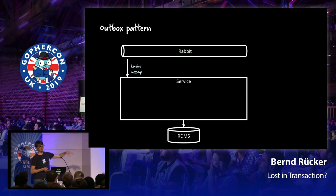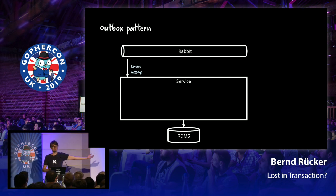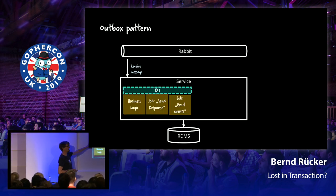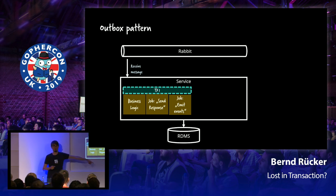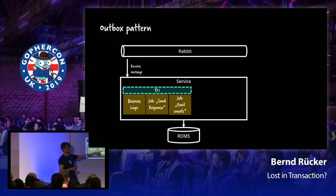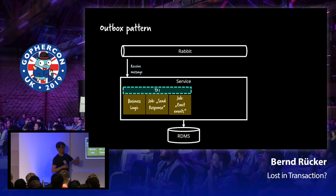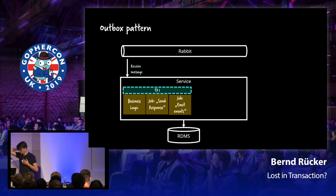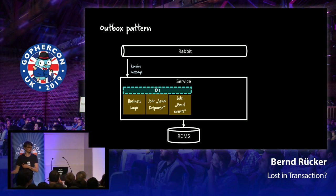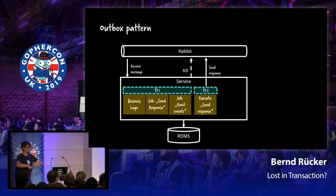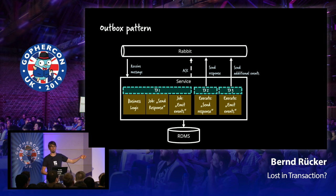Looking at the original example, a lot of people solve this with what's called the outbox pattern. You have your RabbitMQ and your service in Go. You receive the message and do one transaction — that transaction not only does the business logic, but also writes to a separate table in your relational database, like a job. You write that you want to send the response and emit some events later, but you don't do it now. You just write the intent, and you can do this transactionally because you're only talking to that one database. Then you need another job or scheduling mechanism to pick that up and actually send. That's a pretty common pattern — the outbox pattern.